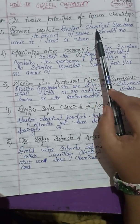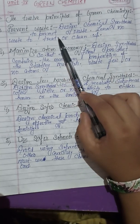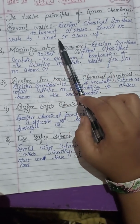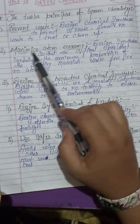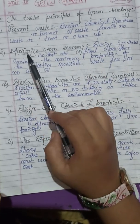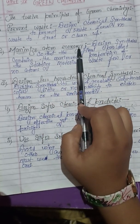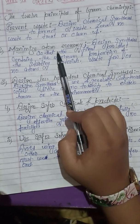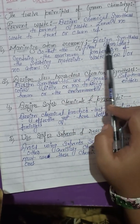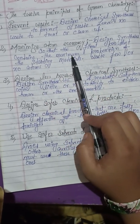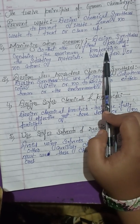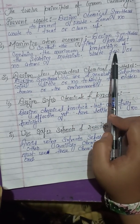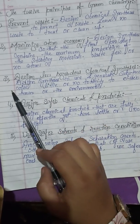Design chemical synthesis to prevent waste — leave no waste to treat or clean up. Second, maximize atom economy: design synthesis so that the final product contains the maximum proportion of the starting materials, with few or no atoms wasted.